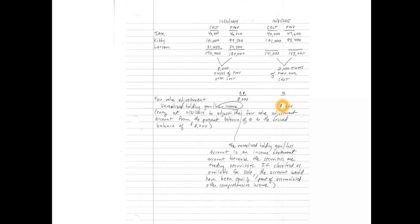If these securities were classified as available-for-sale instead of trading securities, the credit side of the entry would go to unrealized holding gain or loss — equity, which would be part of accumulated other comprehensive income in the equity section of the balance sheet. That unrealized holding gain would bypass the income statement entirely. But in this problem, they're classified as trading securities, so the $8,000 gain goes directly to the income statement.